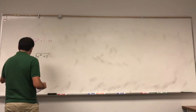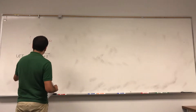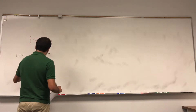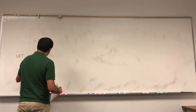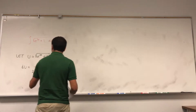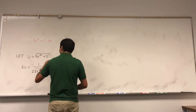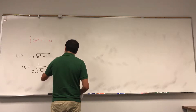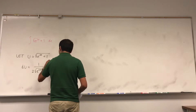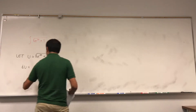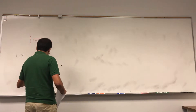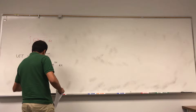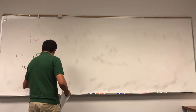So du becomes — you differentiate the square root with the chain rule: 1 over 2 square root of e to the 2x plus 1, but you also have to differentiate the e to the 2x, so 2e to the 2x dx. And we get e to the 2x over square root of e to the 2x plus 1 dx.